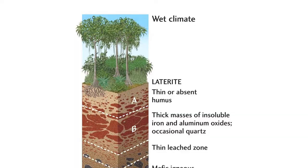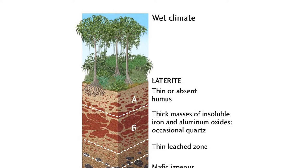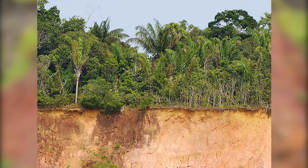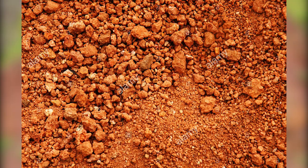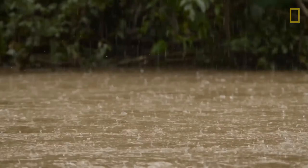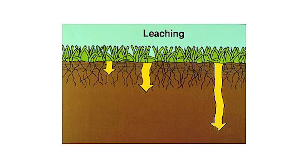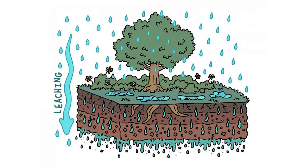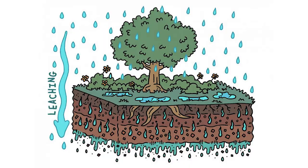Soils throughout the tropical rainforest mostly fall into laterite — well-weathered, acidic red clay soils. While the enormous amount of rainfall feeds millions of plants and animals, it is also the culprit of nutrient loss through leaching. The soil is deficient in major nutrients such as calcium and potassium.